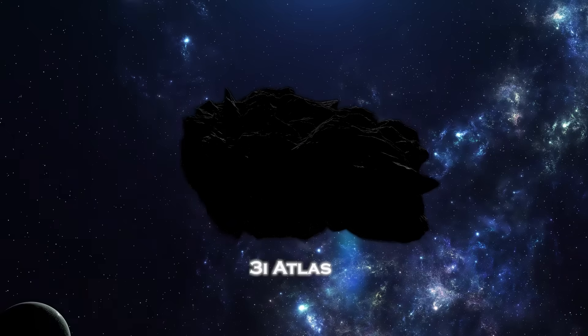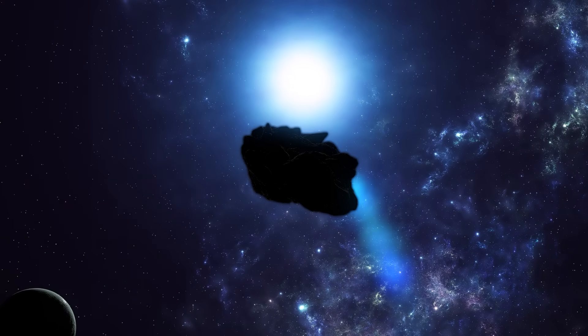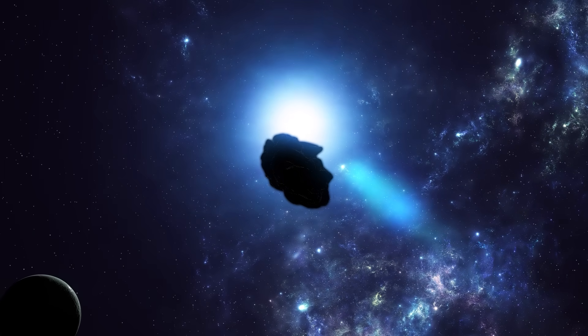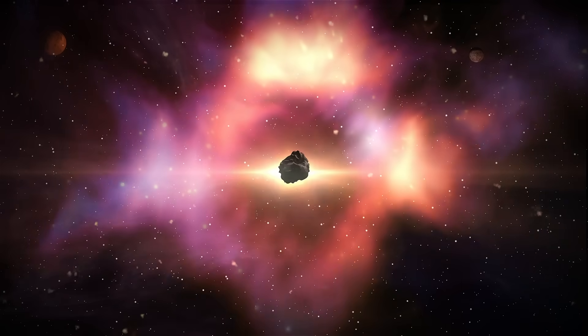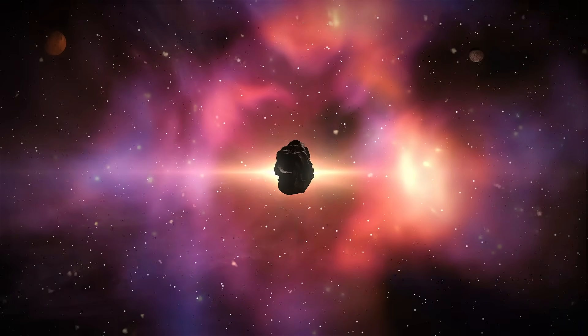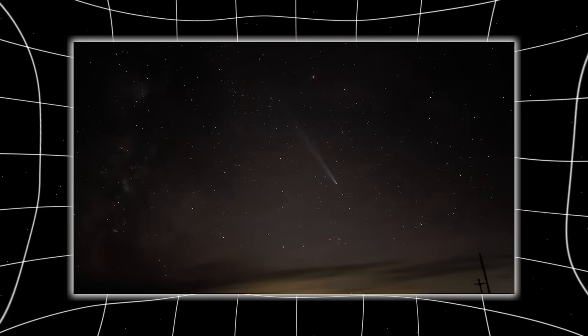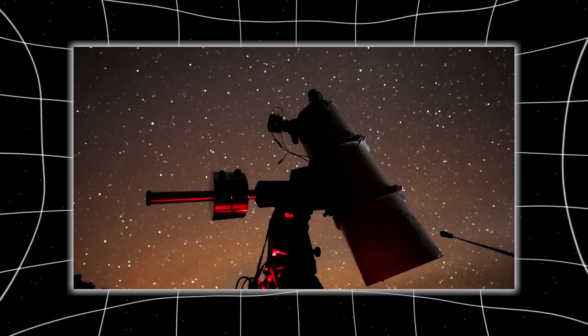The interstellar object known as 3I Atlas, a mysterious traveler from beyond our solar system, suddenly brightened. Not gradually, but explosively. In just six minutes, its luminosity jumped by a factor of four, a flash so fast and precise that amateur telescopes across continents caught it at the exact same moment.